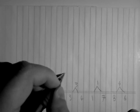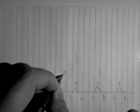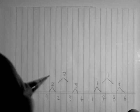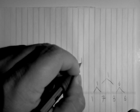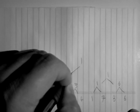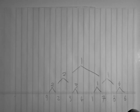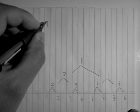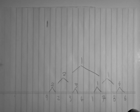Between 2 and 3, 2 is smaller. Between 1 and 6, 1 is smaller. Between 1 and 2, 1 is smaller. So 1 is being popped out — it's the smallest element.